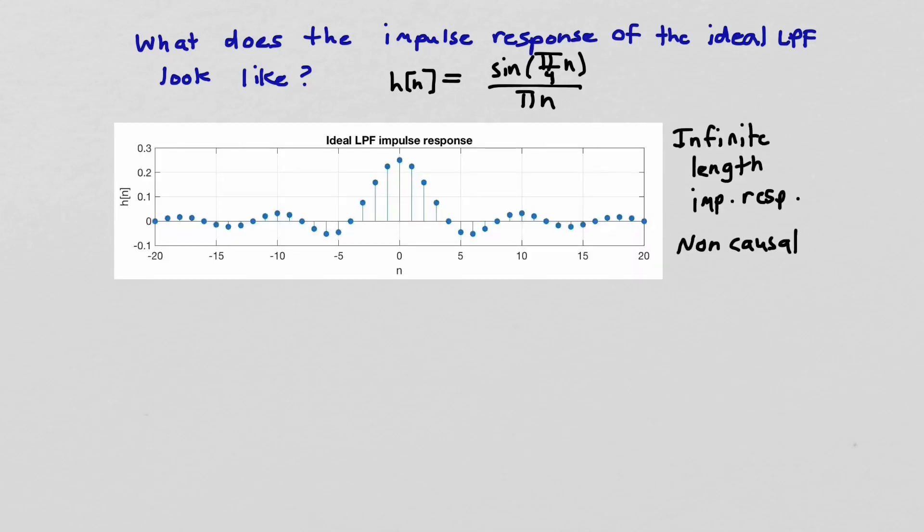Here is the impulse response for this ideal low-pass filter, this specific function here that I plotted in MATLAB. So this is a MATLAB plot, and I've shown it only over the region from n=-20 to n=+20, but it's really important to remember that this is an infinite length impulse response. It goes on forever towards positive infinity, and it goes on forever towards negative infinity. The ideal low-pass filter is a non-causal system. It goes infinite length in both directions.